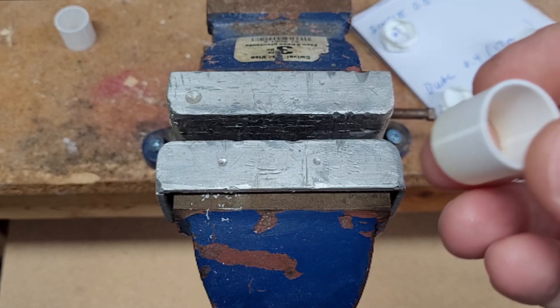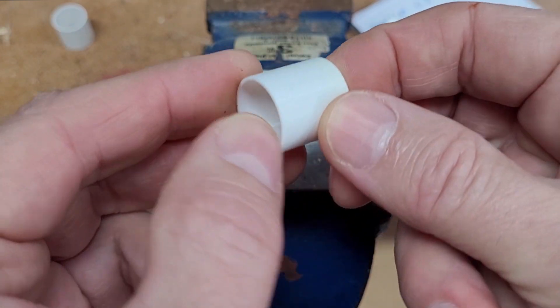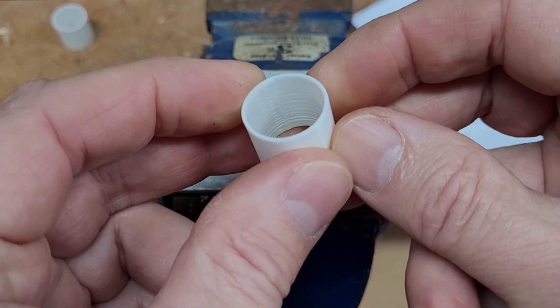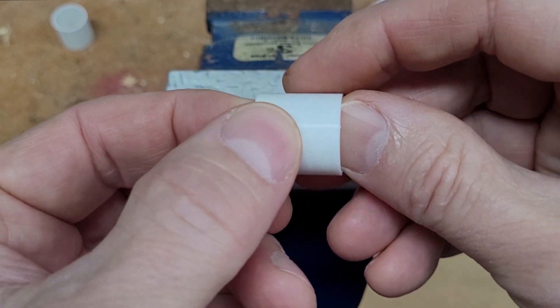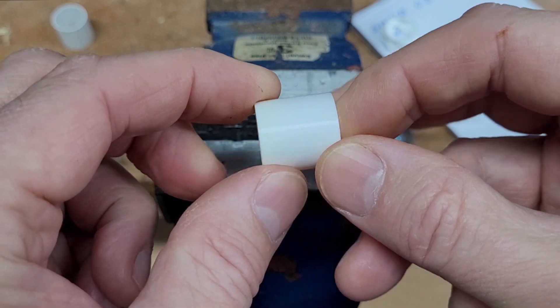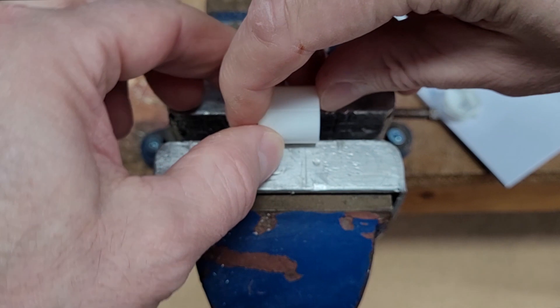So now here we go with the 0.8 millimeter wall, and I'll make sure to place the seam in the same position. So there's the seam on the inside—this is the 0.8—so I'm going to put it in this orientation so that the seam is facing me.